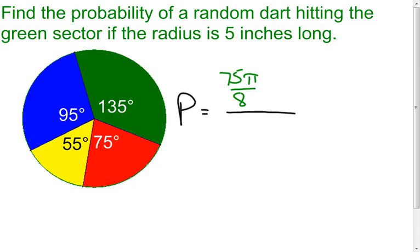And then, we'd have to do the area of the total region, which would be the whole circle. Well, the area of the whole thing is going to be a circle, so π times the radius squared, and the radius is 5 squared. So, that would be 25π.